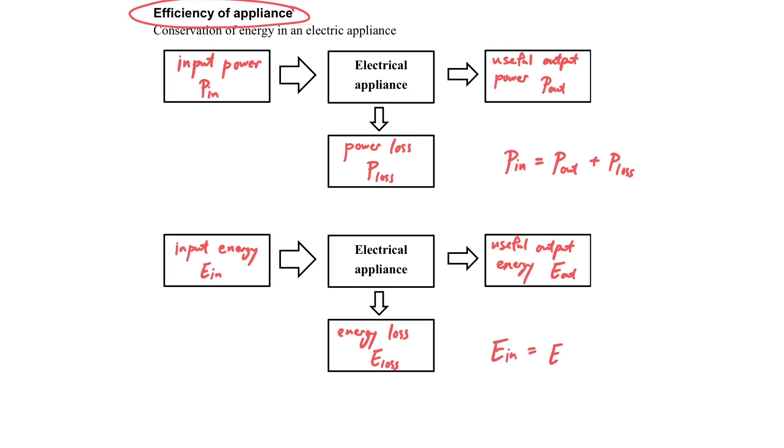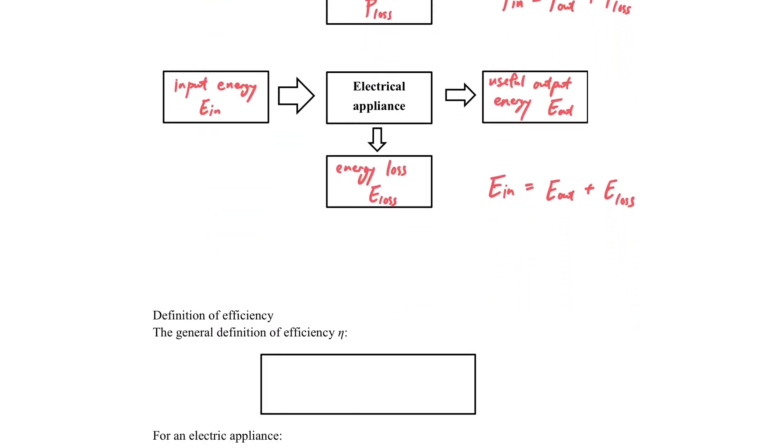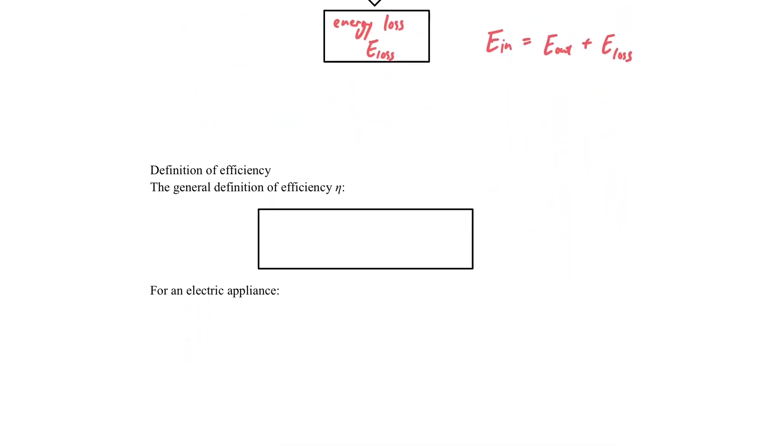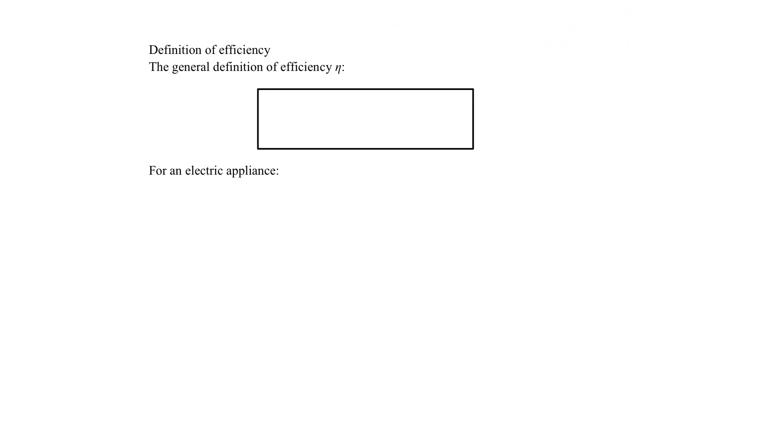So the total energy input will be equal to the total energy output, and the energy output involves those useful outputs and the lost. Now this relationship is important. Now we will see how we'll use it.